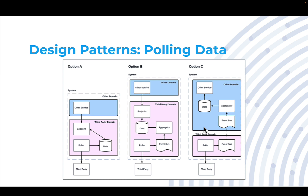The final option, similar to Option C with receiving data in an asynchronous fashion, is that instead of the poller and the aggregator sitting inside our third-party domain, our third-party domain is now just pulling the information and putting it as an event on the event bus. That leaves it to the domain who needs to use the third-party data to build their own aggregator based off of the event bus. The advantage is it can handle much larger amounts of data because we're not calling web services to get data in bulk — we're just streaming data directly off the event bus.